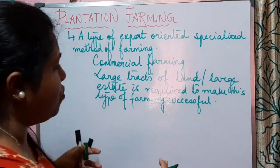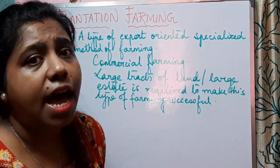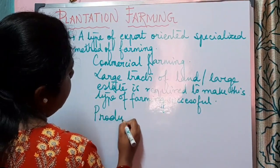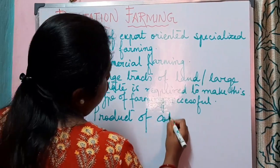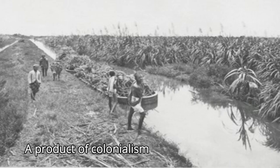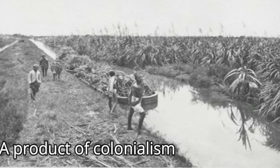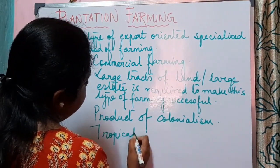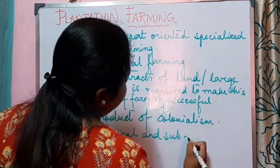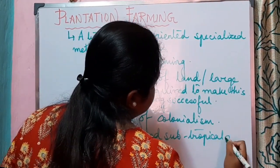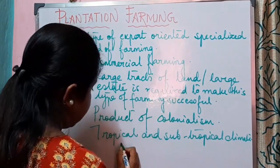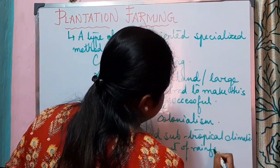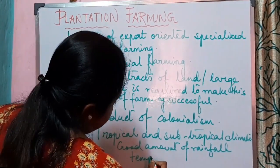This type of farming has a long history. Plantation farming started from the period of colonization, so we can say that plantation farming is a product of colonialism. This type of farming is mainly practiced in areas which experience tropical and subtropical climate. It needs a good amount of rainfall and high temperature.